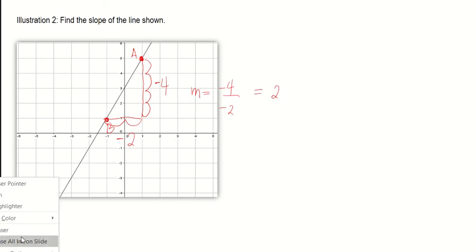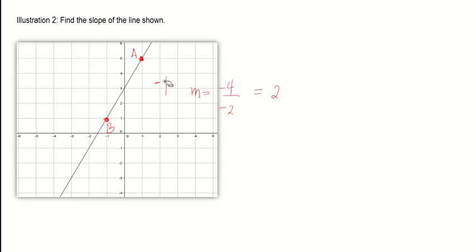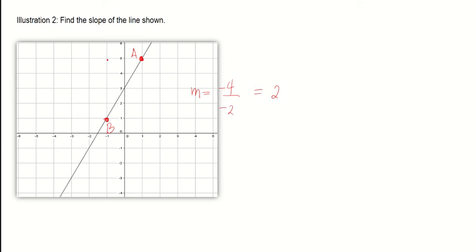What if you chose point B as your first point? Starting from point B, sketch a right triangle going to point A. Count the rise: four units going up — that's positive four. From this point going to point A, two units going to the right — so it's positive. The ratio gives M equals four divided by two, so the slope is positive two. We arrive at the same answer.